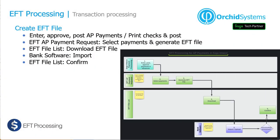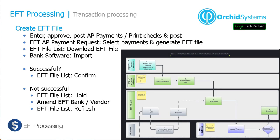That shows you the normal processing: post your payments, select the payments for an EFT file, generate the file, download it, import it into the bank, and confirm all was okay. Next, we're going to run through what happens if the bank says there's something wrong with the file — for example, you may have had a payment date in the past, and most banks would reject that. So what do we do to change that file, how is it tracked, and how is it audited?